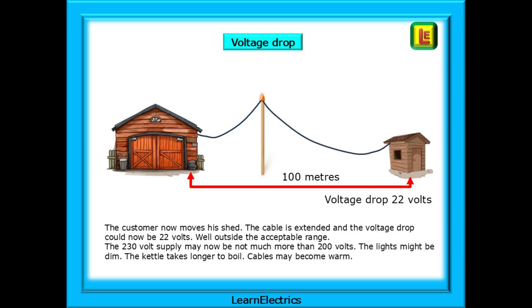The DIY chap now moves his shed a further 50 metres away. The electrical cable is extended, and the voltage drop increases and could now be 22 volts, well outside the acceptable range. The 230 volts supply may now be not much more than 200 volts. The lights might be dim, the kettle takes longer to boil, and cables may become warm. What he's done is added more cable, which is more resistant, which means more voltage drop across the cables.